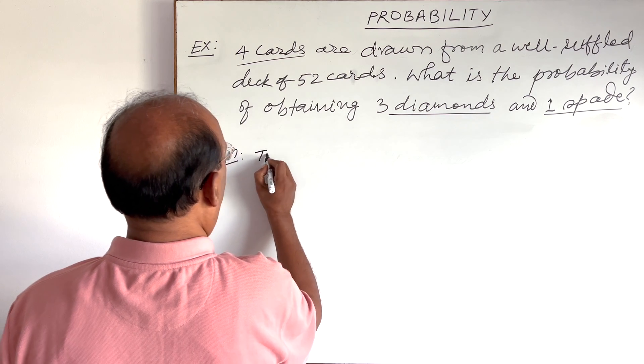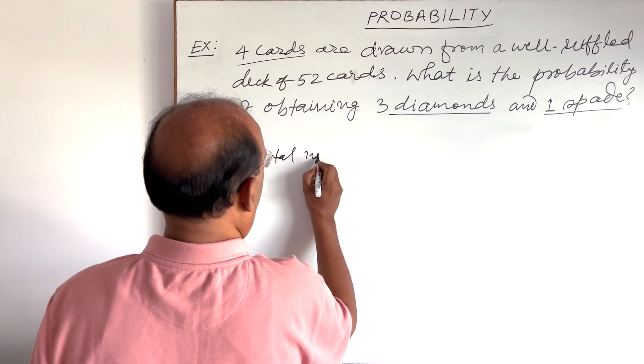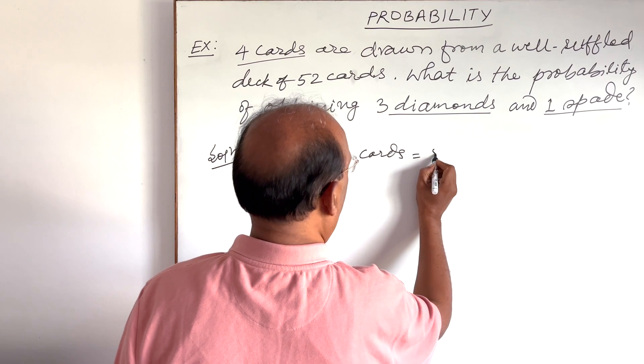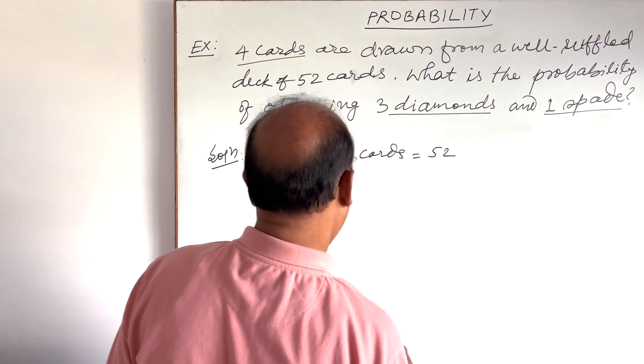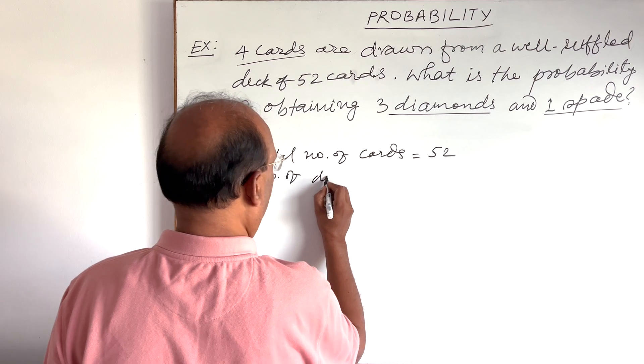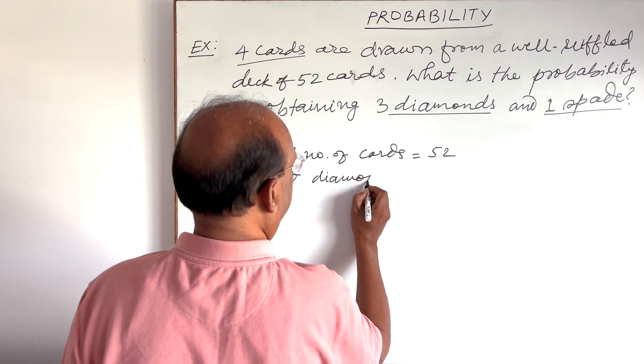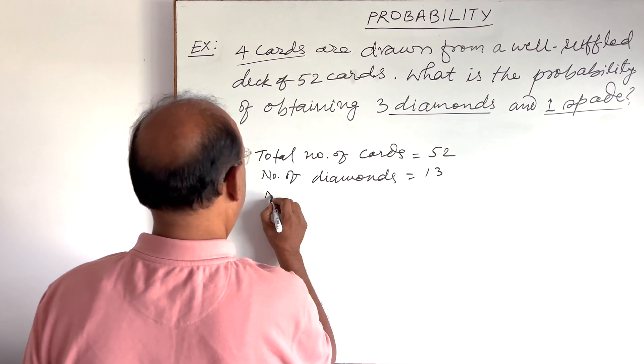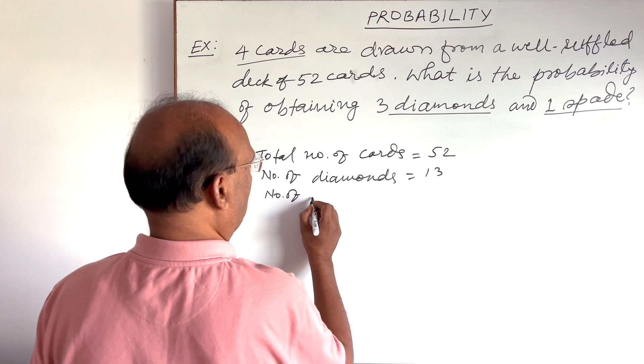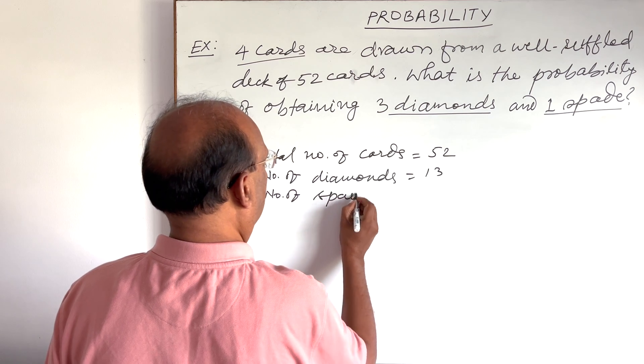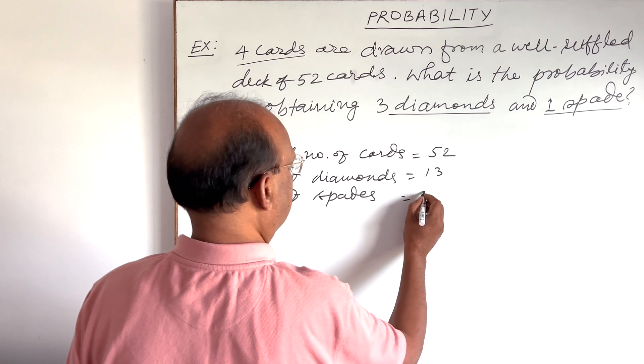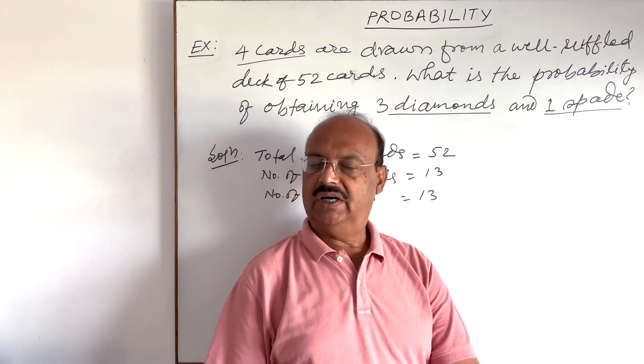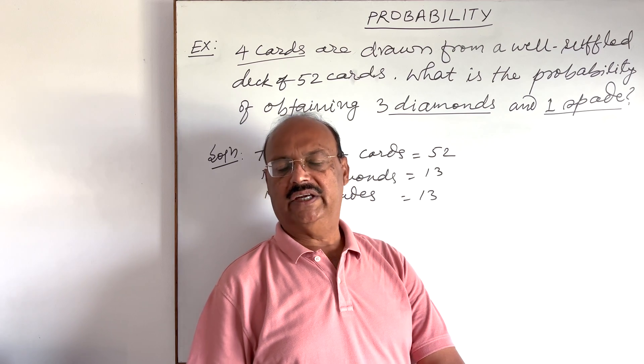You know that total number of cards is equal to 52. Number of diamonds is 13 as well as number of spades is also 13. Hearts 13 and clubs 13.